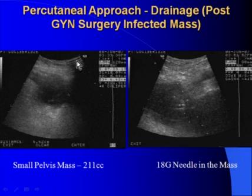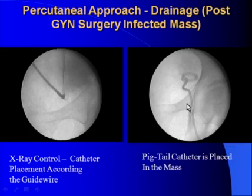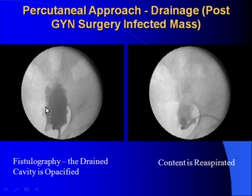The percutaneous approach may also be used for drainage procedures. This is an infected cystic mass in a patient who underwent surgery for GYN malignancy — it was an infected seroma. The needle is inserted into the mass, the guide wire is conducted, and the opacified cavity is confirmed at the second stage of control using fluoroscopy. Finally, a pigtail catheter is placed in the mass. Contrast agent is injected to confirm the drained cavity, followed by aspiration of the content.